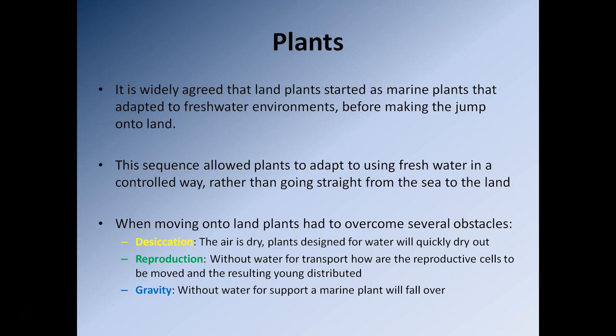The next problem to overcome is reproduction. Organisms that live in water use water to transport reproductive cells from male to female. When it comes to being on land, that water is largely gone, so you have to work out how you're going to transfer the male and female sex cells to produce new young plants.